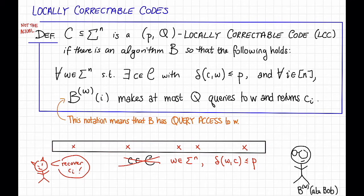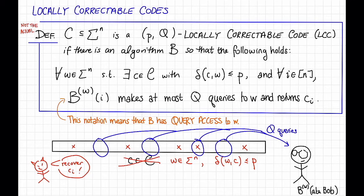So Bob, also known as our algorithm B, has query access to this word W, and he's allowed to make at most Q queries, however he wants. Let's say he queries this position, this position, and so on. Notice that Bob might query corrupted symbols, he doesn't know. Then Bob's job is to do what the adversary asked him to do, and recover CI.